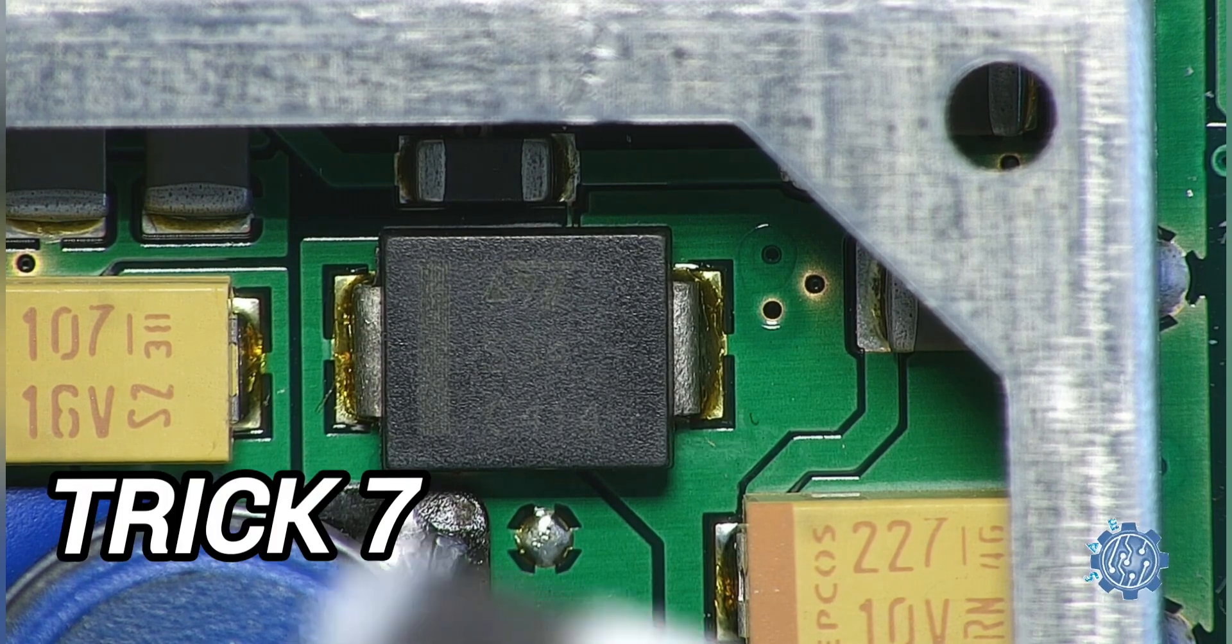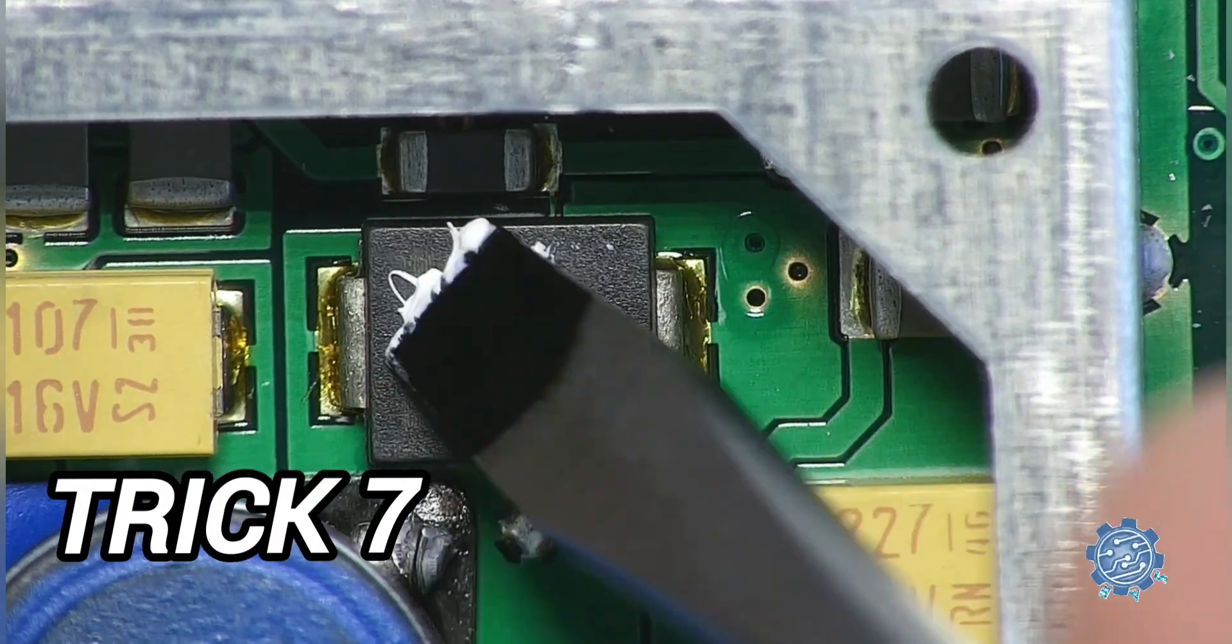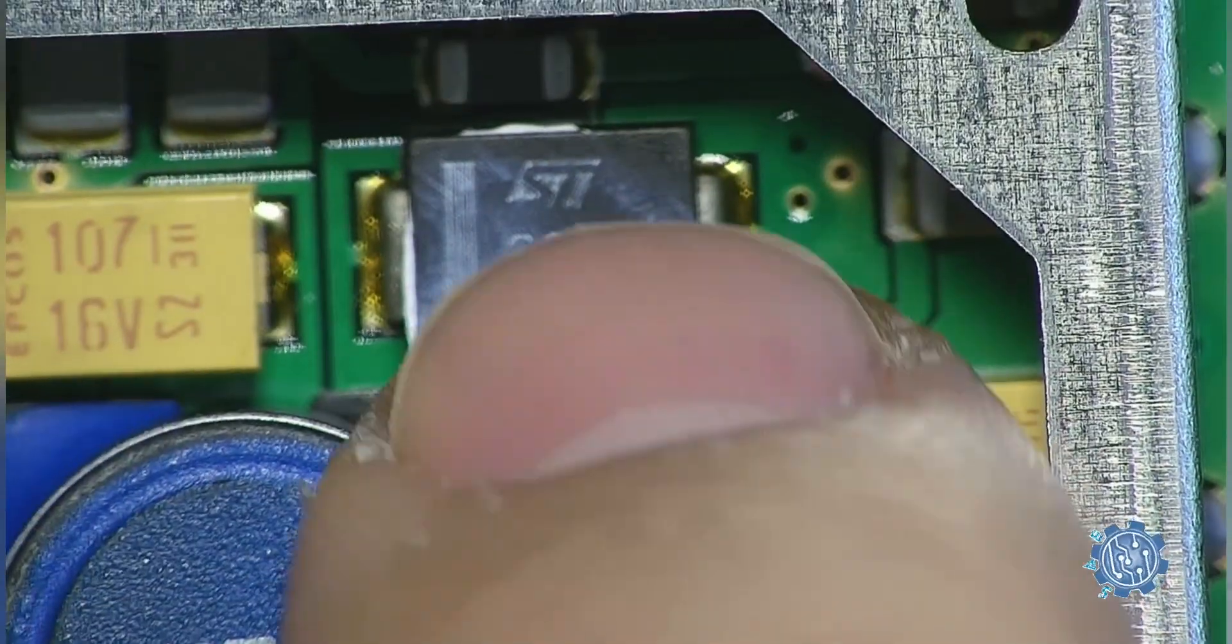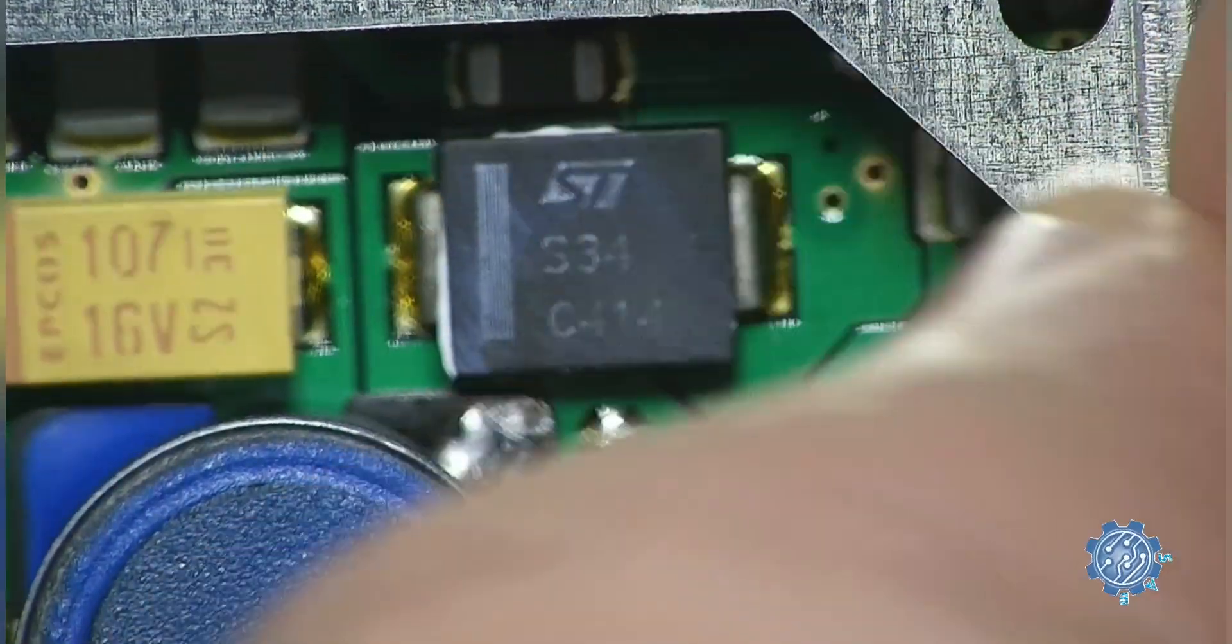Component name identification trick. If you can't read the name of a component, try this trick. Apply thermal paste, wipe off the excess and the name should become visible.